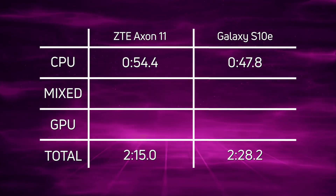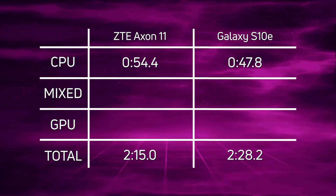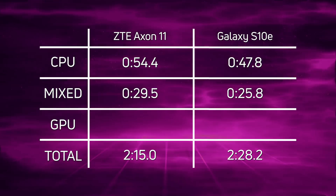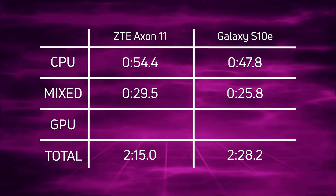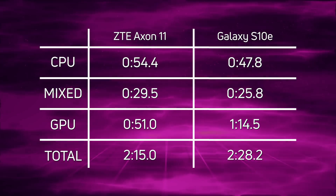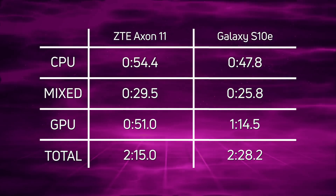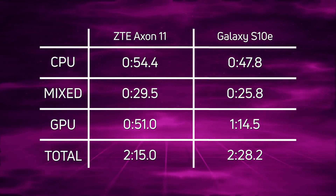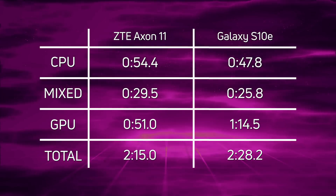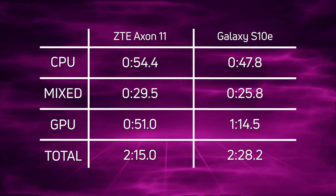Looking at the CPU breakdown: 54.4 seconds versus 47.8 seconds — a win by the S10e of 6.6 seconds. Then in the mixed CPU/GPU test: 29.5 seconds for the Axon 11 versus 25.8 for the S10e, so again another win for the Galaxy S10e by 3.7 seconds. But then in the GPU test everything flips: 51 seconds for the Axon 11 versus 1 minute 14.5 for the S10e — a difference of 23.5 seconds. All those CPU and mixed wins for the S10e were thrown away in the GPU test, and therefore overall the Axon 11 wins at 2 minutes 15.0.